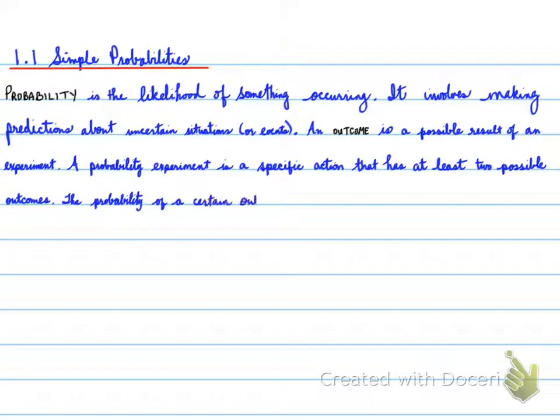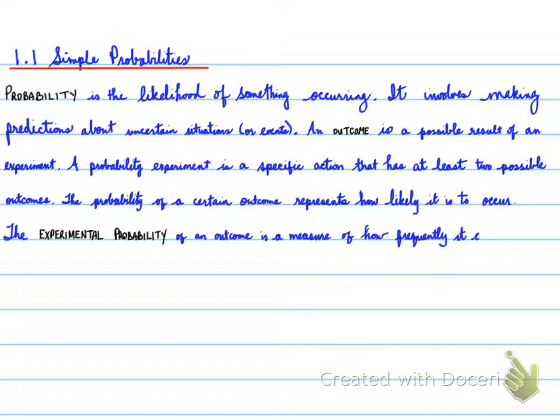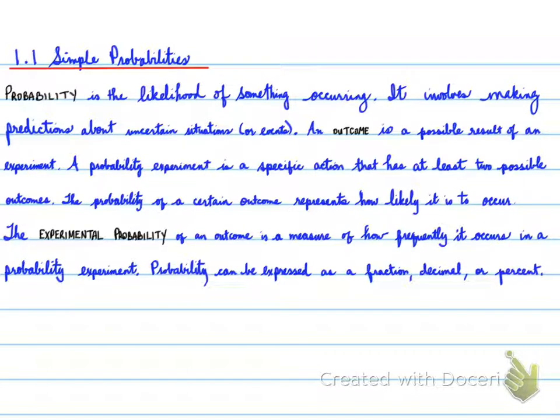A probability experiment is a specific action that has at least two possible outcomes. The probability of a certain outcome represents how likely it is to occur. When we're looking at probability, there are different types. The first type we're looking at today is experimental probability. The experimental probability of an outcome is a measure of how frequently it occurs in a probability experiment. Probability can be expressed as a fraction, decimal, or percent. Here's the formula for the probability. The probability of A occurring is equal to the number of times A occurs divided by the number of trials.